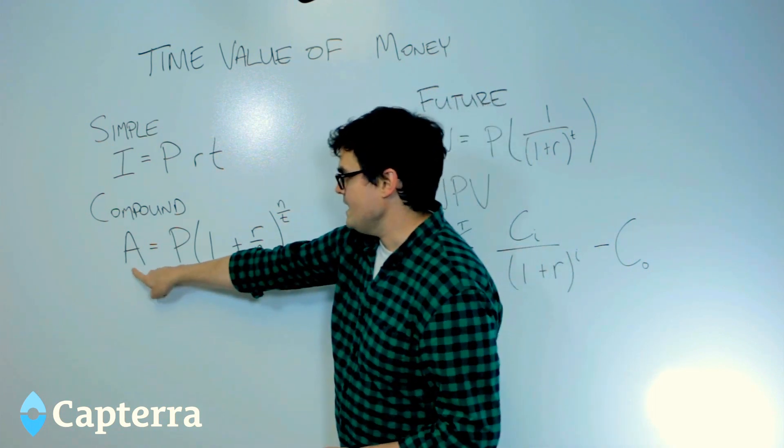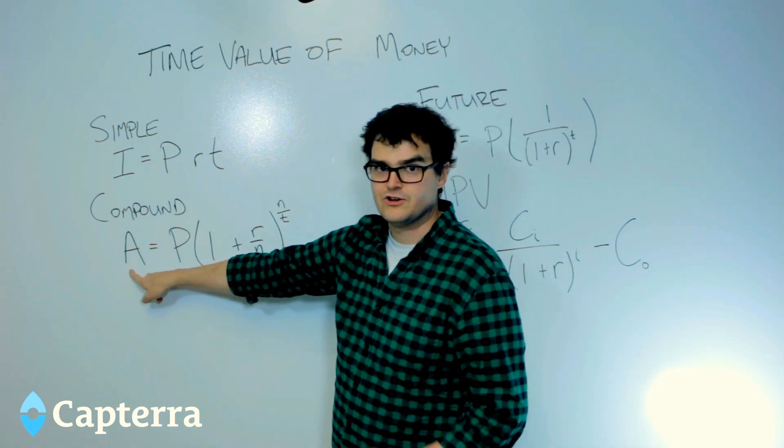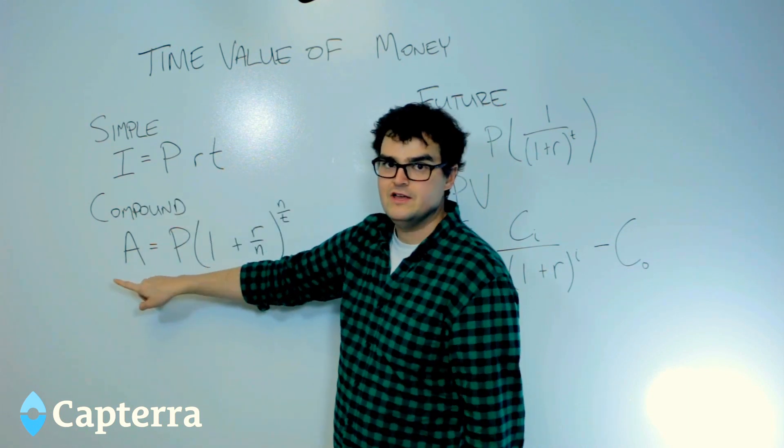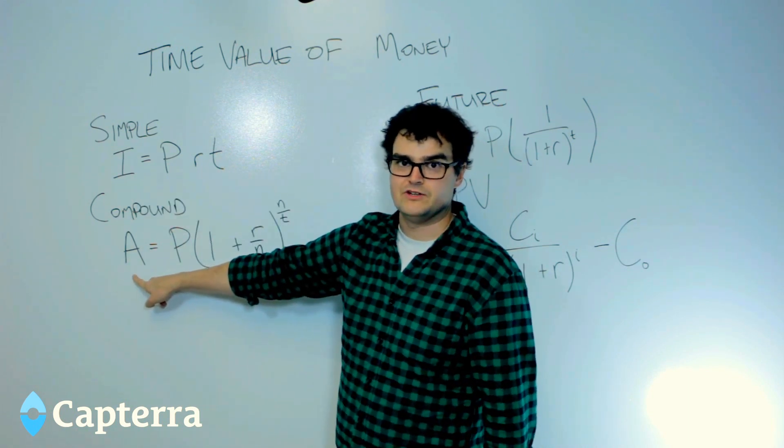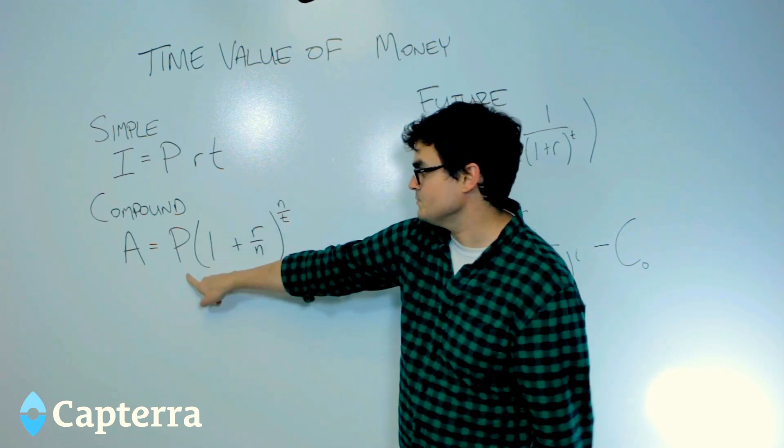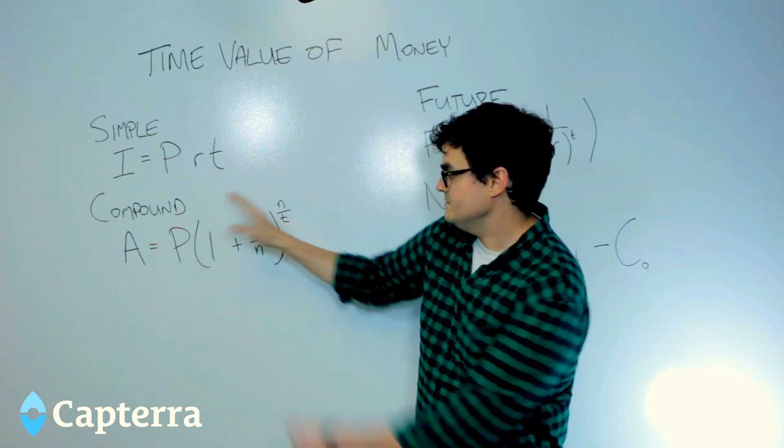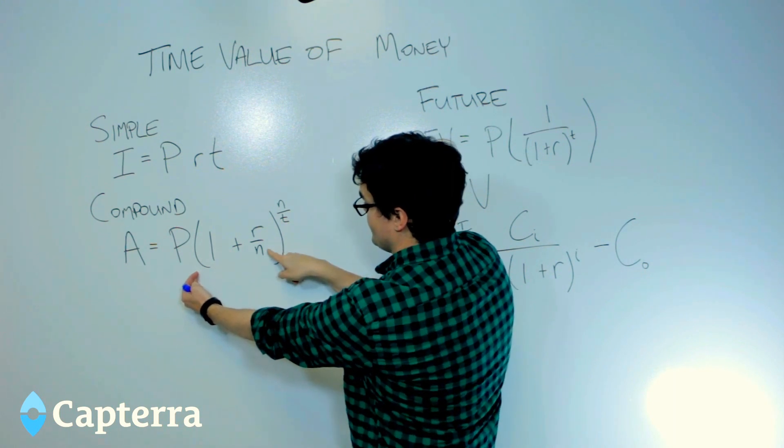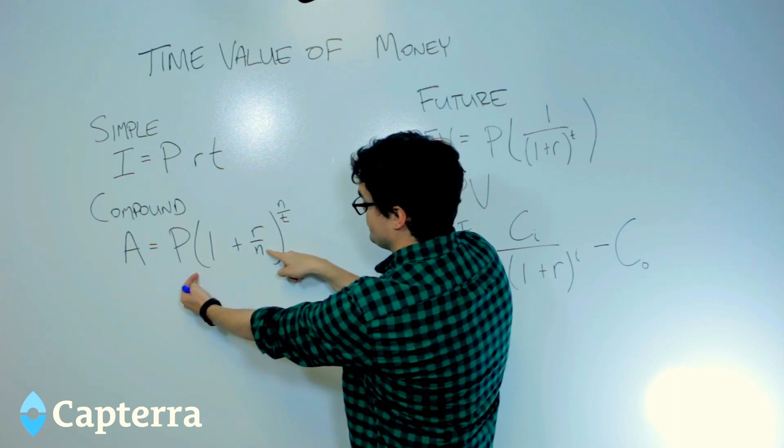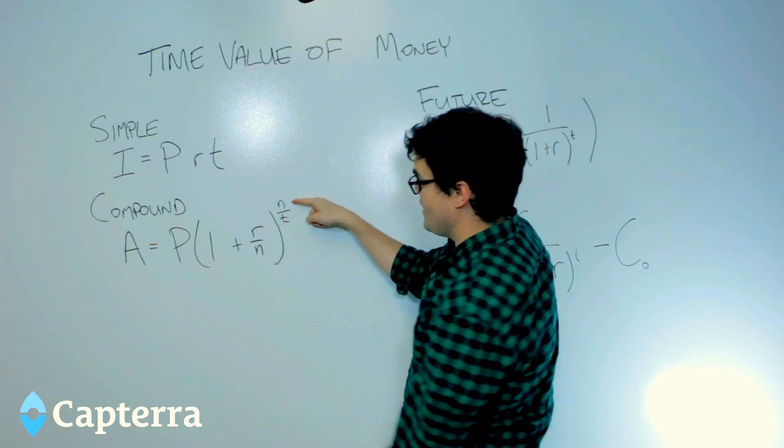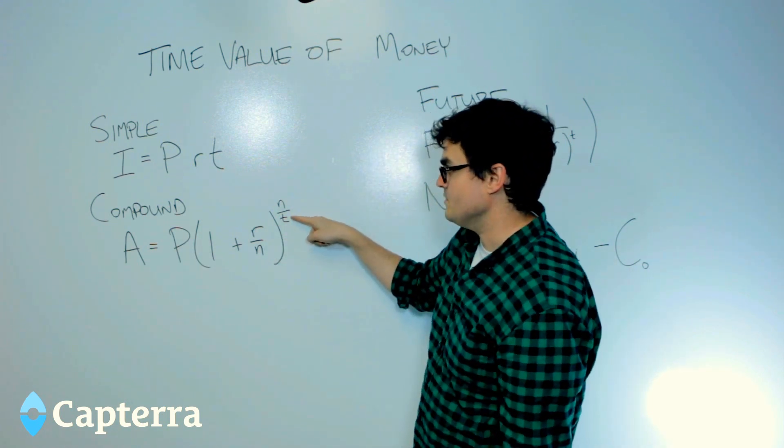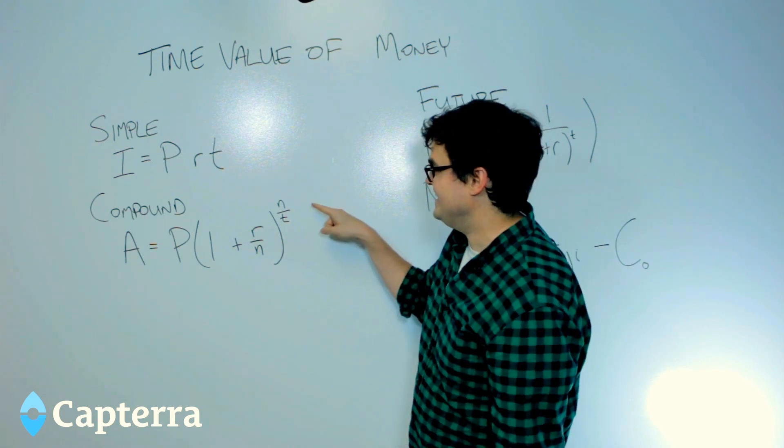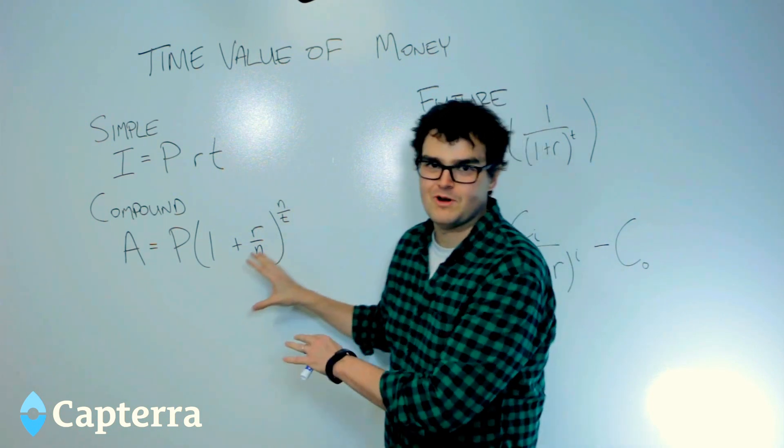So A, that's the total amount that you're going to be charging. So here we're just figuring out the interest, here we're figuring out the total amount. The total amount that you're going to be charging in the compound interest equation is the principal times 1 plus the rate over the number of payments per period, raised to the power of the number of payments per period over time. So don't worry about it.